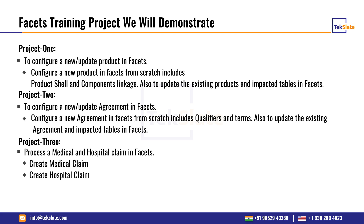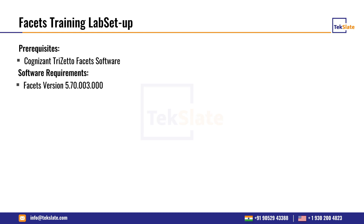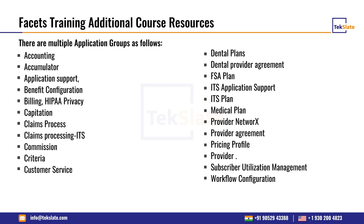The second project will be to create an agreement in Facets — creating, updating, or adding qualifiers to terms, or adding global agreements and fee schedules. The third project will be processing a medical and a hospital claim, covering which fields are required, the receive date and date of service criteria, how charge amounts and billed amounts are calculated. The prerequisite is Facets access with version 5.7.03, though lower versions will also work with only minor differences.